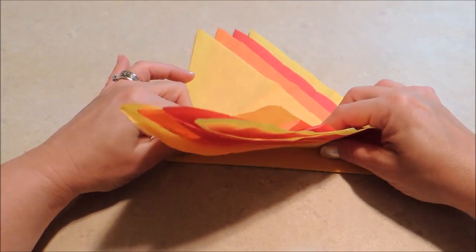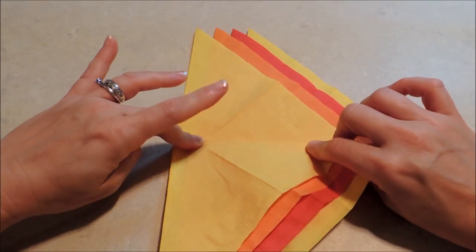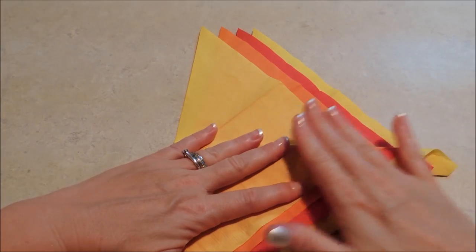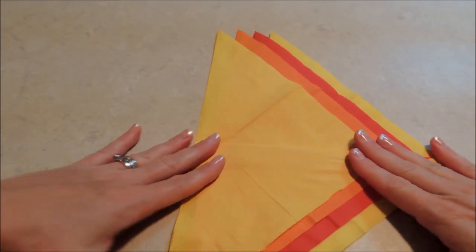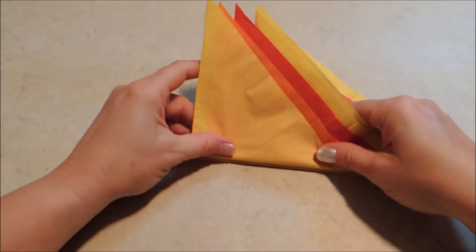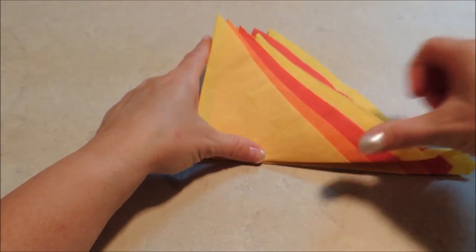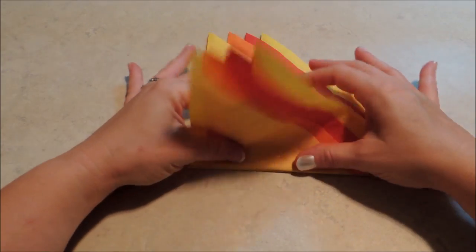You can do kind of a large accordion fold here if you want, up to an inch even, because the fold is not going to remain. It's just going to give us a little bit of a pleat when we pull our flame layers out.